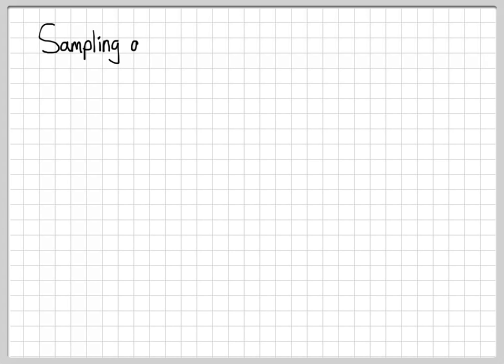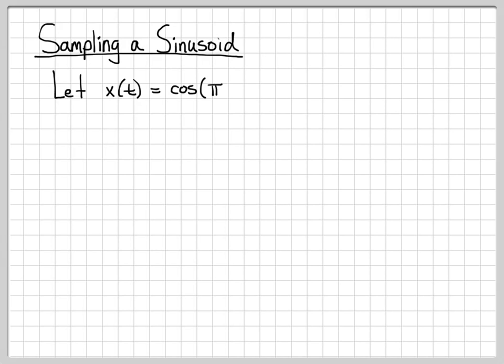Now that we have a nice analytic expression for the Fourier transform of an impulse sampled signal, let's go ahead and work a specific example. Let's see what happens when we do impulse sampling of a sinusoid. We'll start with the signal x of t, and let x of t equal cosine of pi t.